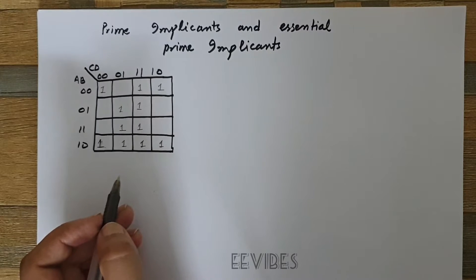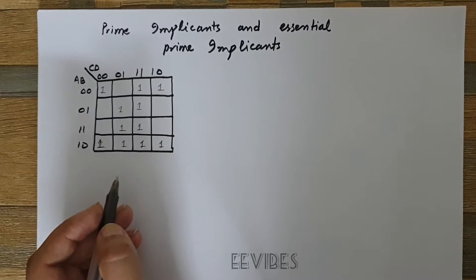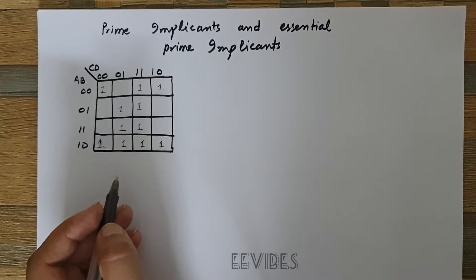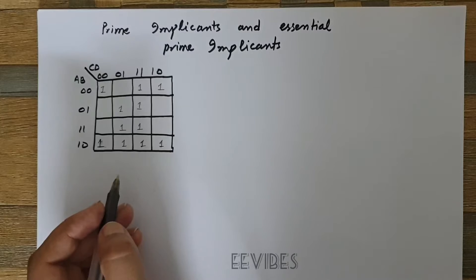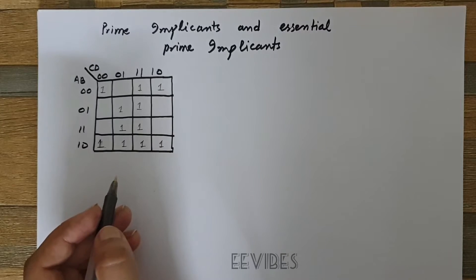The essential prime implicants are formed by looking at each square marked with a one and checking the number of prime implicants that cover it.